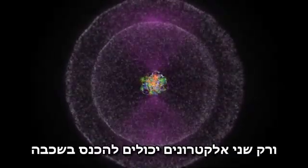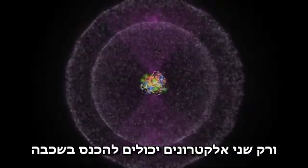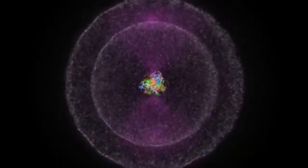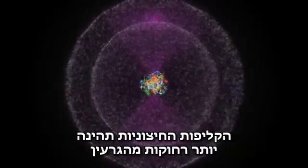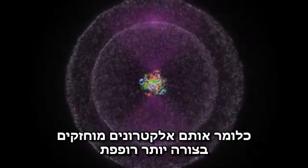And only two electrons can fit per layer. So, the more electrons an atom has, the further away from the nucleus the outer shells must be. And that means these electrons are more loosely held.